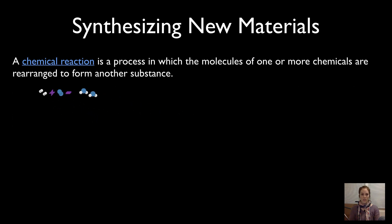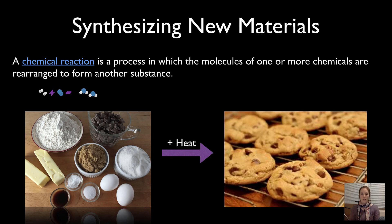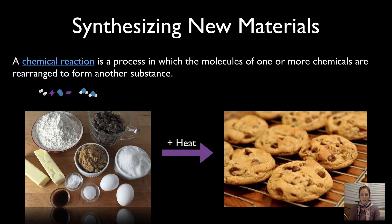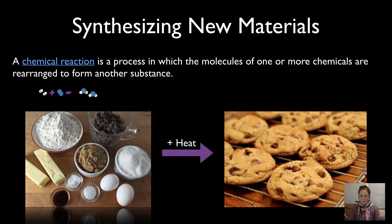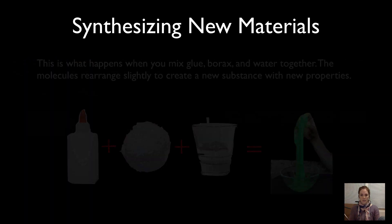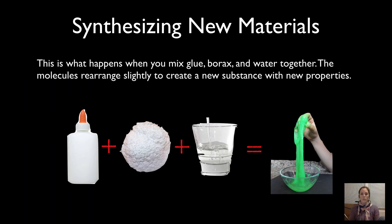We do this in our kitchens every day. We get ingredients from natural resources like plants and animals, mix them together, add some heat, and all of the molecules are rearranged to make something that feels, smells, and tastes different than the original ingredients. The kitchen is kind of like a lab — just like in our lab, where we mixed glue, borax, and water together to make a new substance with new properties.